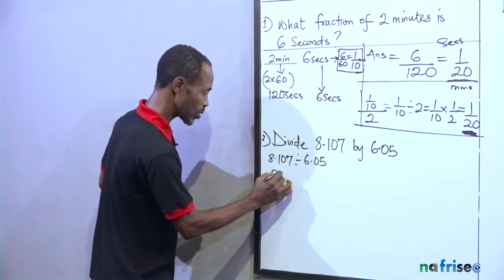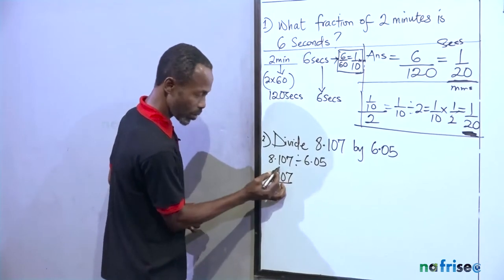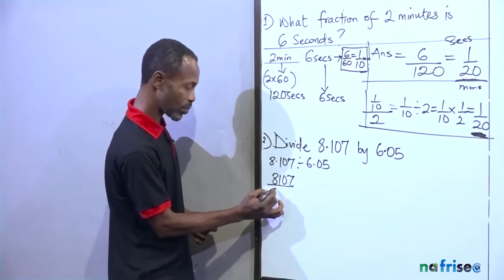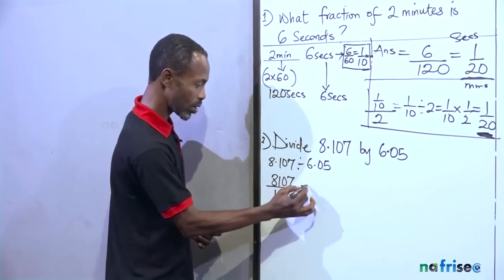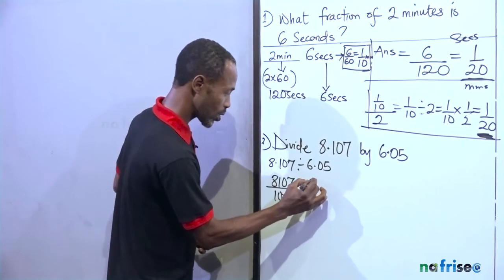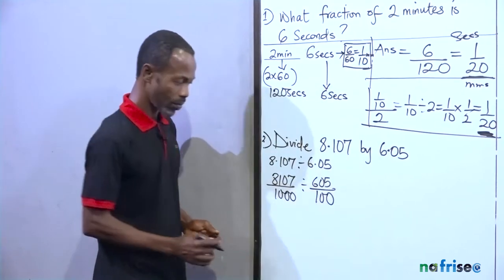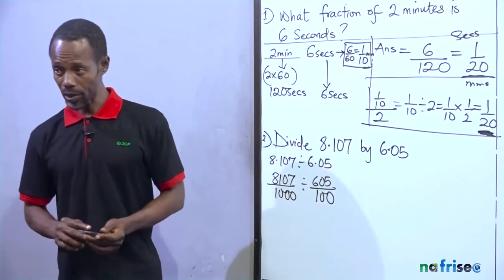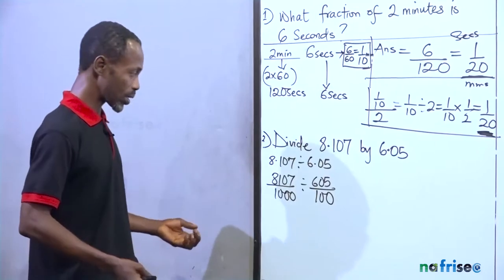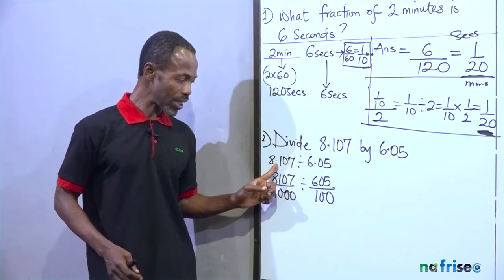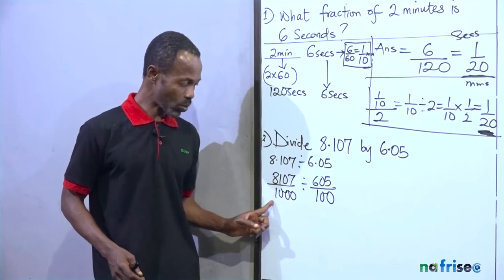This becomes 8.107. Because of the three numbers after the decimal point, it becomes over 1,000 divided by 6.05 over 100. I'm changing the decimals to fractions. And how do I do that?